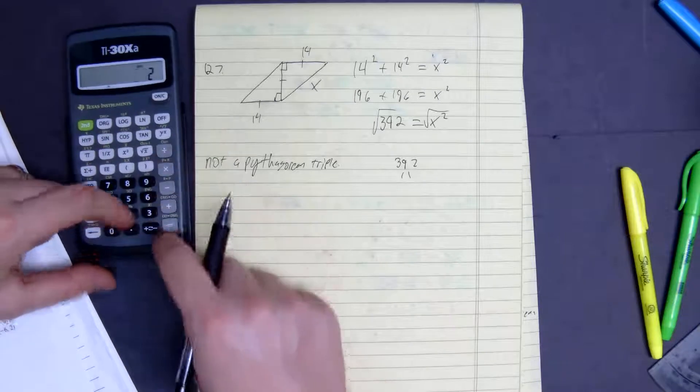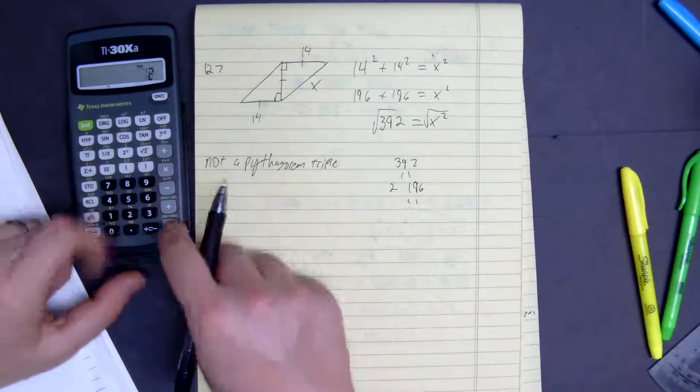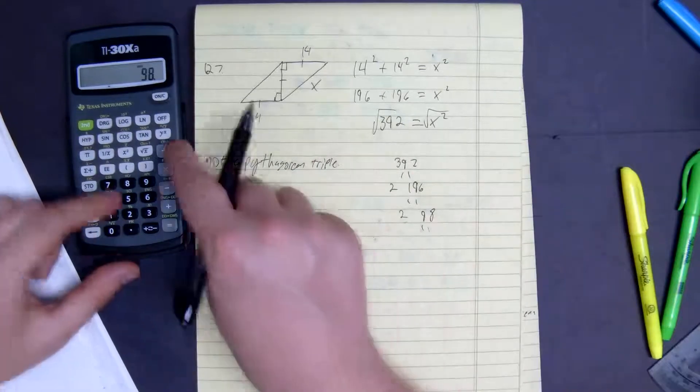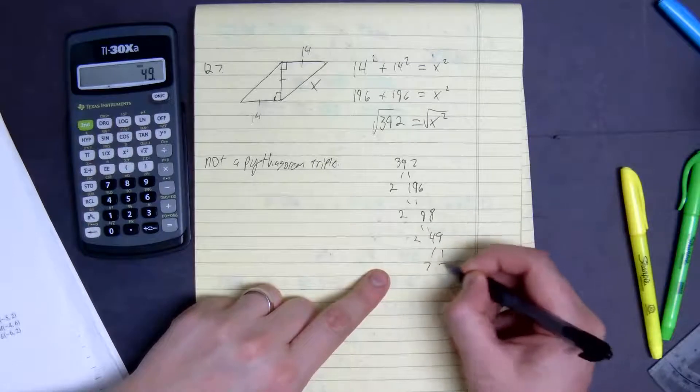So 392 divided by 2 gets you 2, 196. Divide that by 2, you get 2 and 98. Divide that by 2, you get 2 and 49, which you get 7 and 7.